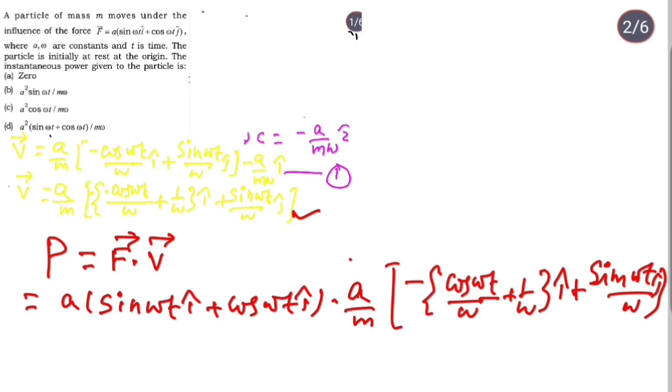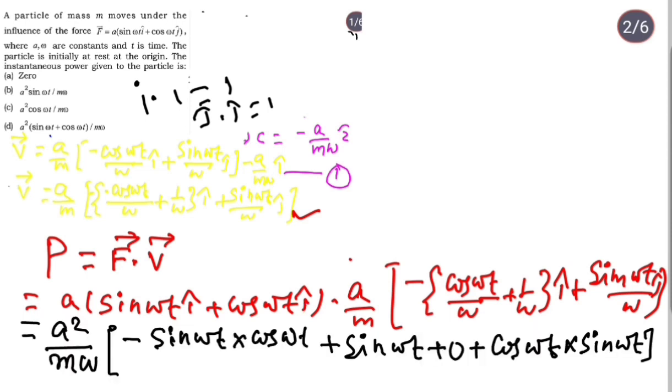This term and this term will multiply, and the j terms will multiply. This product is a into a by m, so it's a² by mω. Then i term into i term, so here we get sin ωt minus - so a² by mω. Then sin ωt into minus cos ωt, i into i is one.